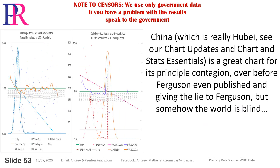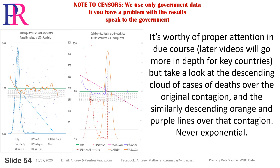China — which is really Hubei, see our chart updates and Chart and Stats Essentials — is a great chart for its principal contagion, over before Ferguson even published and giving the lie to Ferguson. But somehow the world is blind. It's worthy of proper attention in due course. Later videos will go more in-depth for key countries. But take a look at the descending cloud of cases and deaths over the original contagion, and the similarly descending orange and purple lines over that contagion. Never exponential.